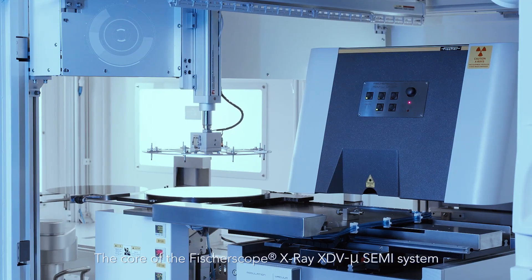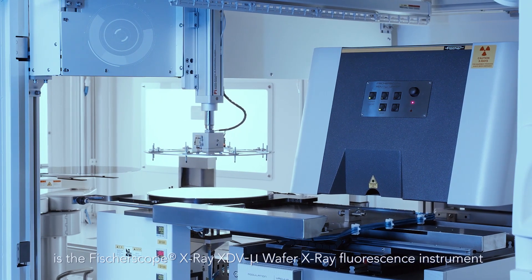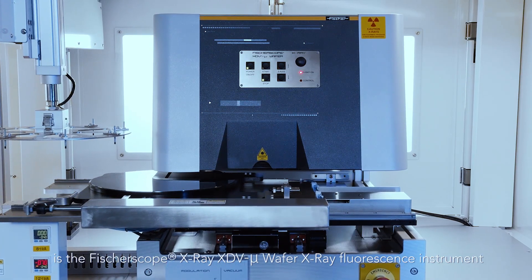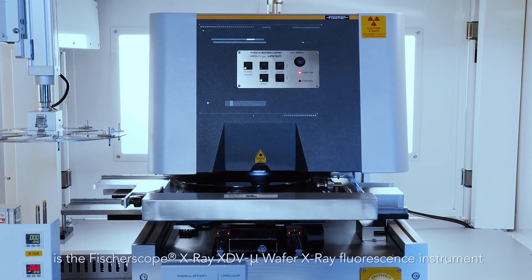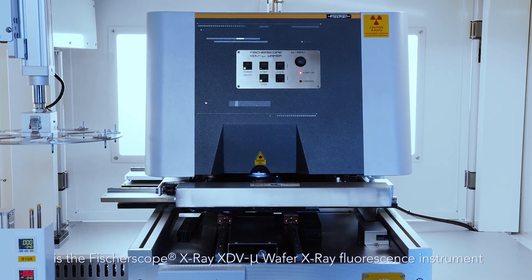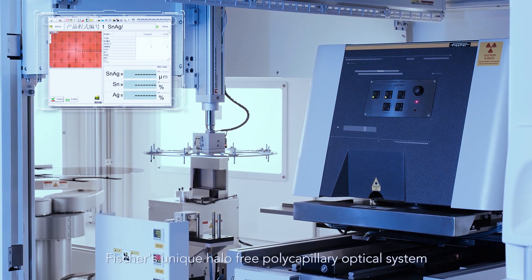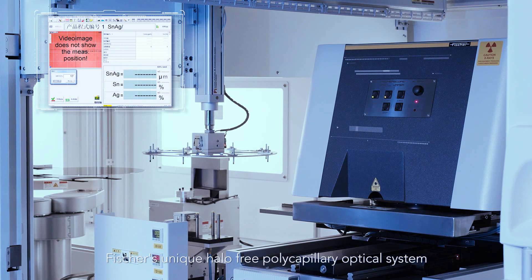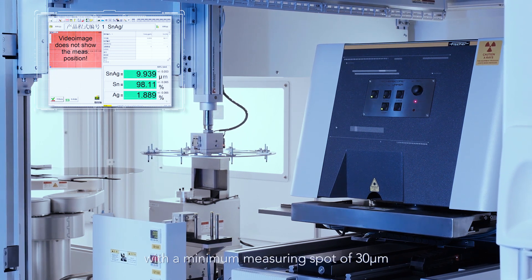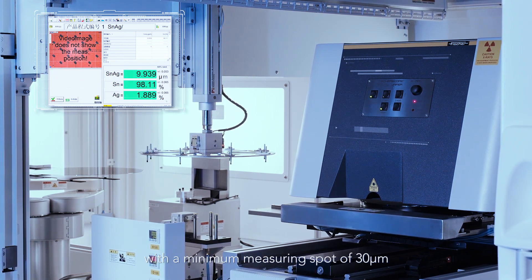The core of the Fischerscope X-ray XDV mu SEMI system is the Fischerscope X-ray XDV mu wafer X-ray fluorescence instrument. The key features of this instrument are Fischer's unique halo-free polycapillary optical system with a minimum measuring spot of 30 microns.